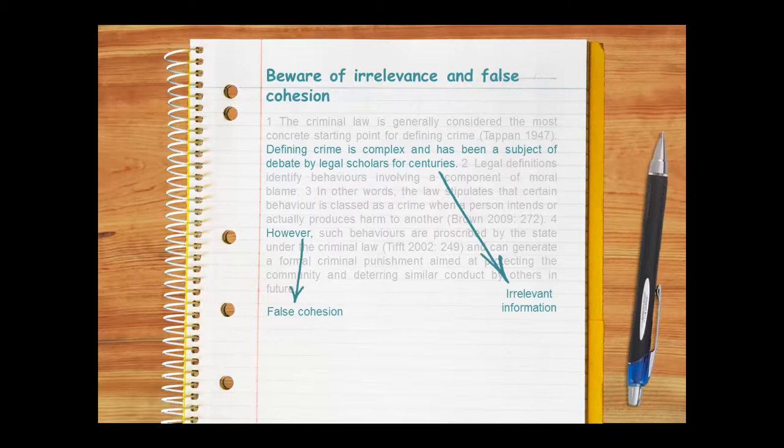In addition, the use of the connective 'however' is confusing and makes no logical sense. It's an example of false cohesion — or trying to make ideas seem cohesive when they're not.